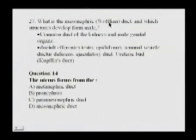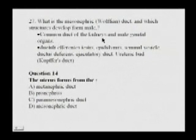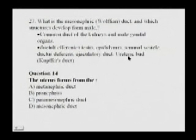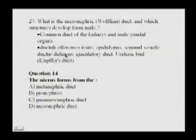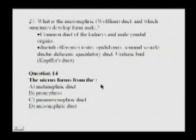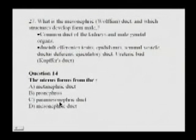The mesonephric (Wolffian) duct was the common duct of the kidneys. Structures that develop from it in the male include the ductuli efferentes of the testis, the epididymis, the seminal vesicle, the ductus (vas) deferens, the ejaculatory duct, and the ureteric bud (Kupffer's duct). The uterus forms from the paramesonephric (Müllerian) duct.